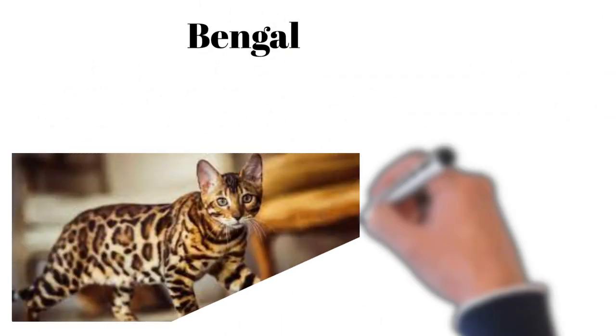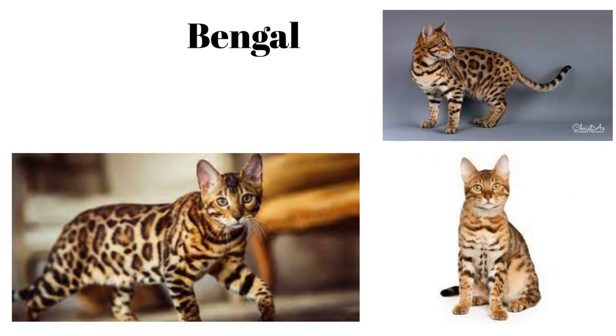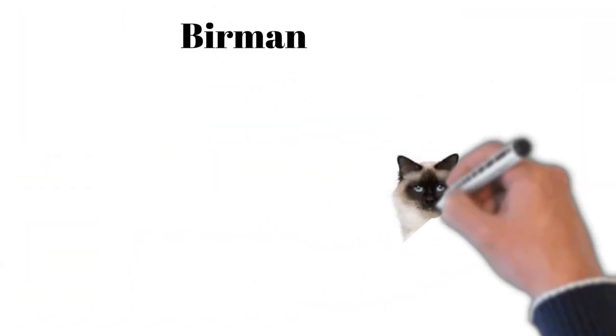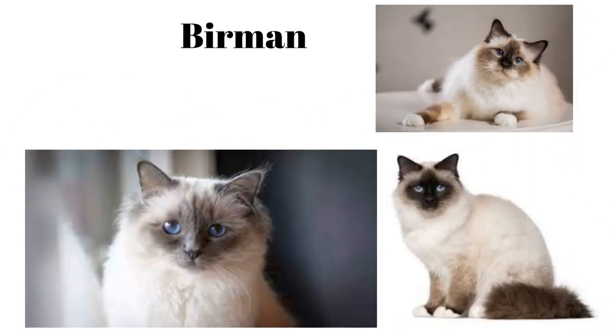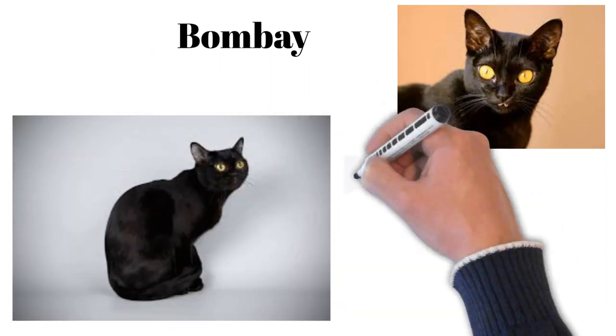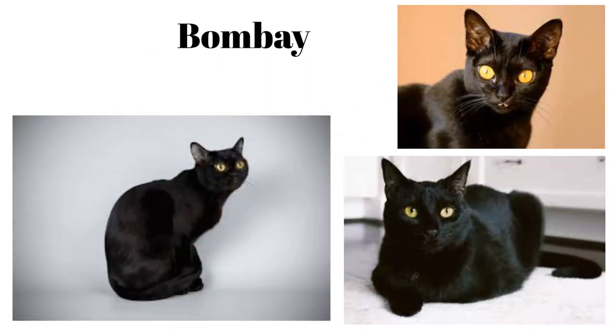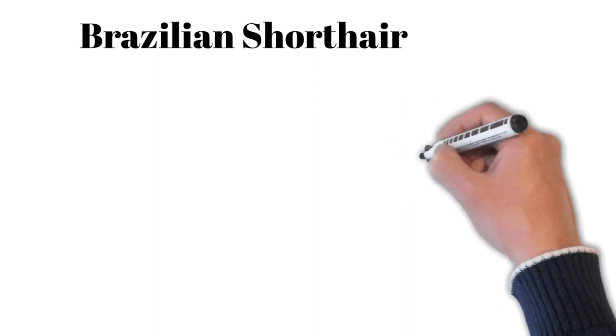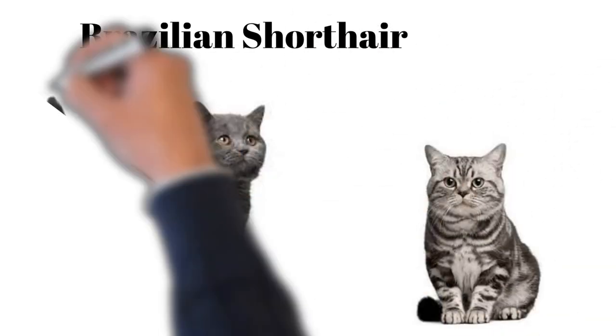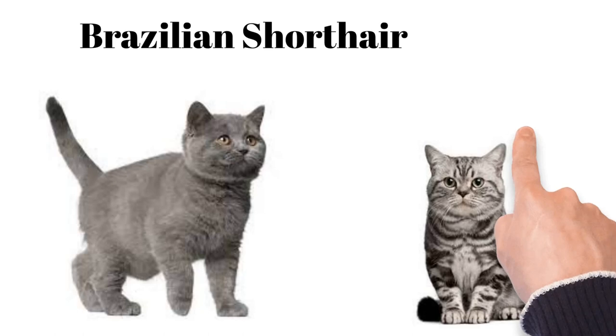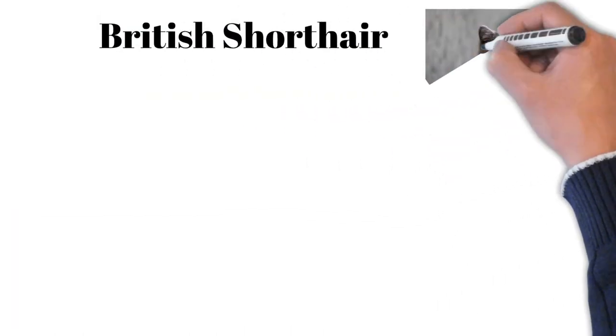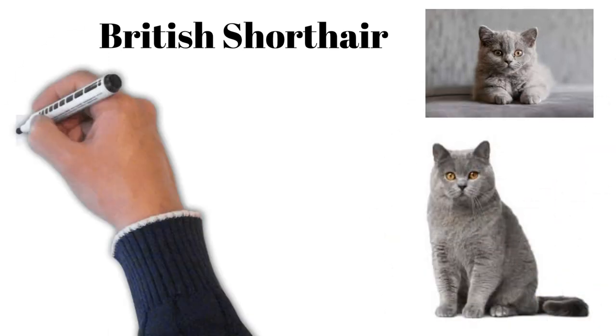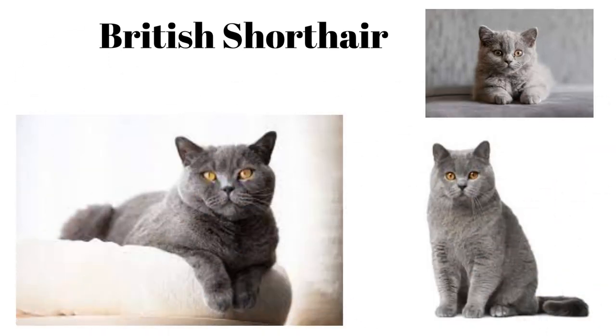Bengal: wild appearance, loves climbing and water, intelligent and active. Birman: gentle, affectionate, known for striking blue eyes and color points. Bombay: Black Panther-like appearance, affectionate, playful and good with children. Brazilian Shorthair: athletic build, social, enjoys interactive play, good with families. British Shorthair: chubby-cheeked, dense coat, calm, dignified and good-natured.